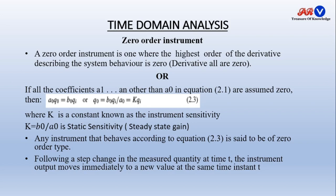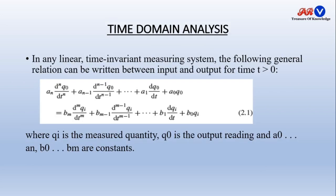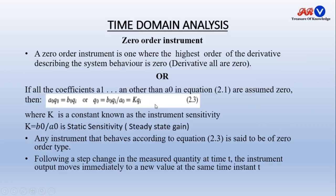Now, zero order system. This is the differential equation. Zero order means all the higher order derivatives are 0. So we have the equation: a0·Q0 = b0·Qi, or output = (b0/a0)·Qi, where b0 and a0 are constants. They can be represented by k, where k is a constant known as instrument sensitivity. A zero order system is one in which all the derivatives are 0.